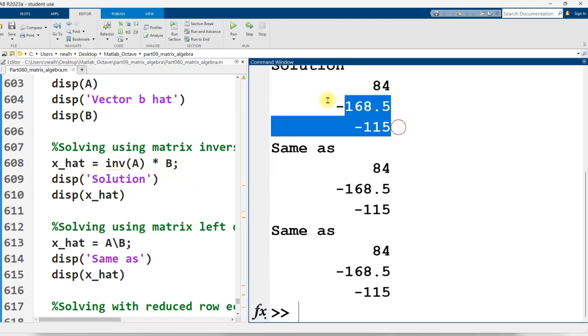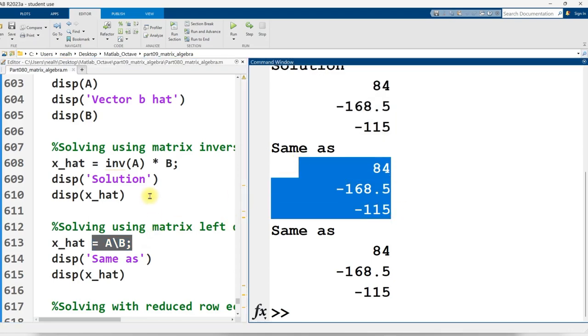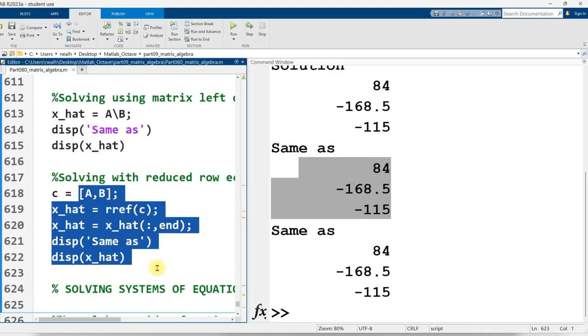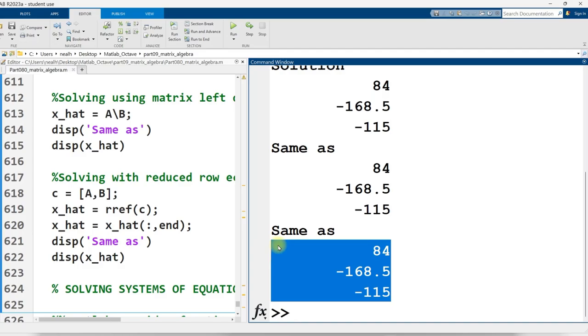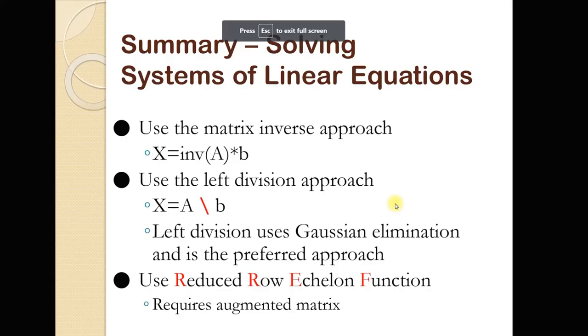So inverse of A times B, there's our solution. A left divided by B, there's our solution. Reduced row echelon form, if you like, there's that solution right there. So those are our three ways of solving systems of equations in MATLAB.